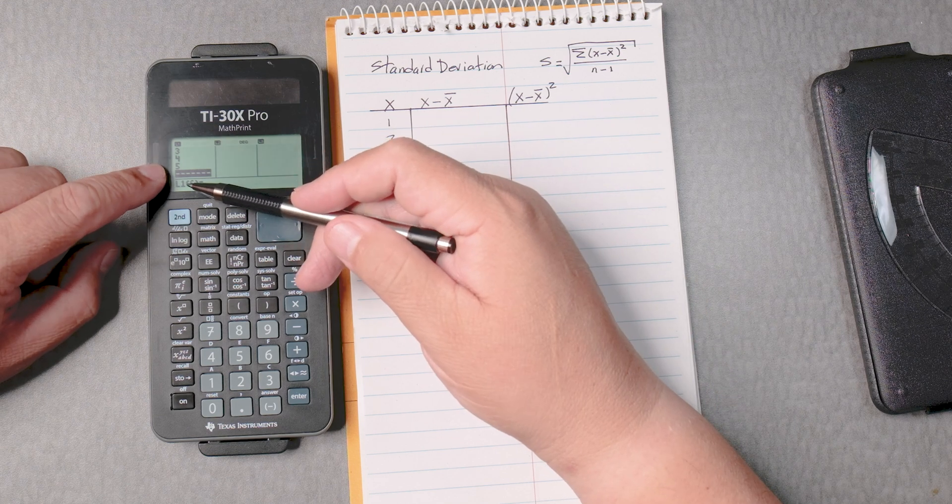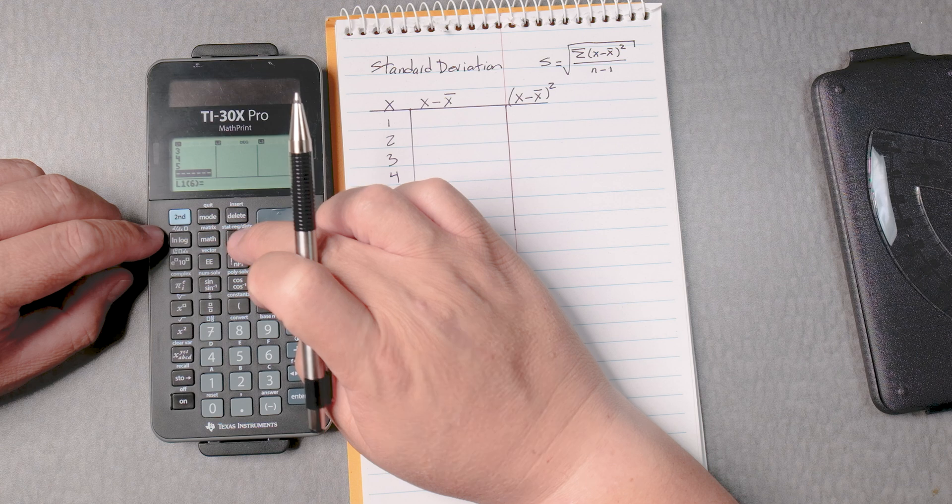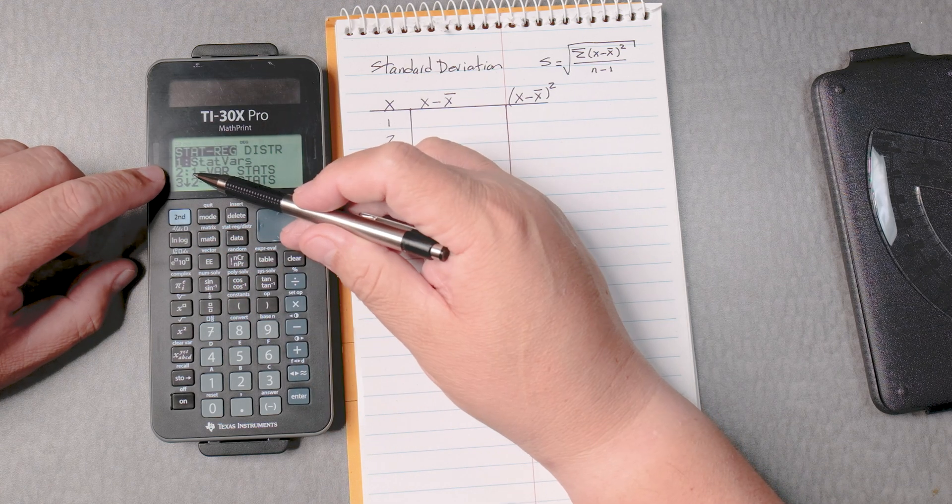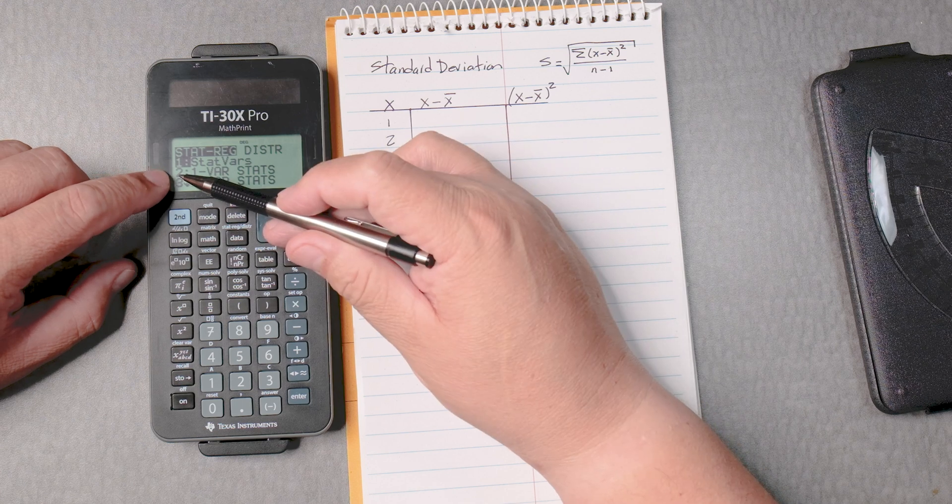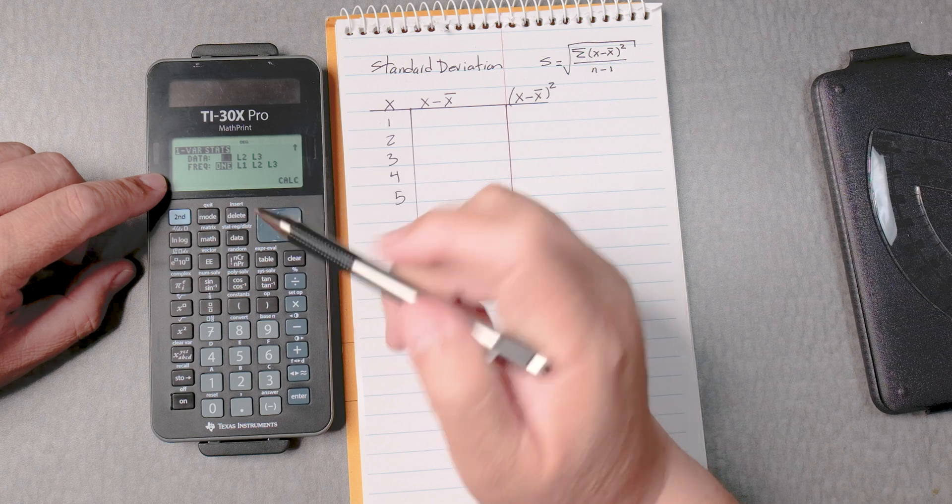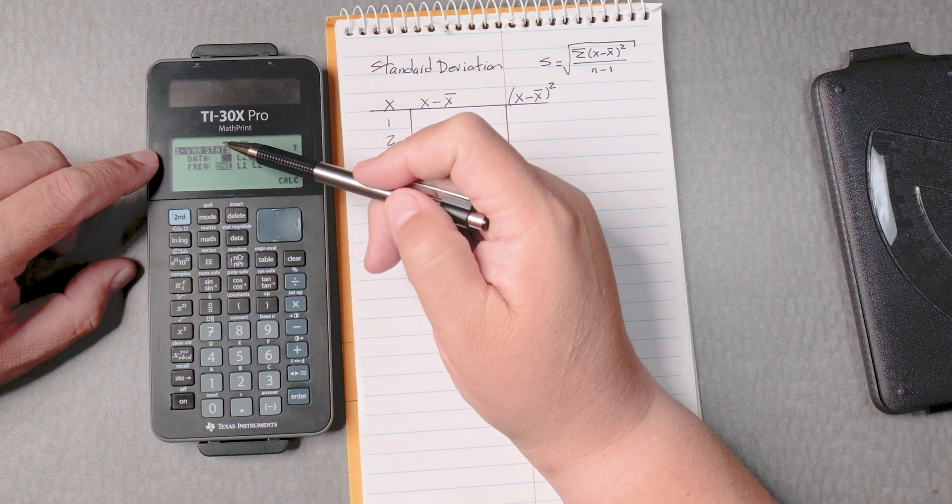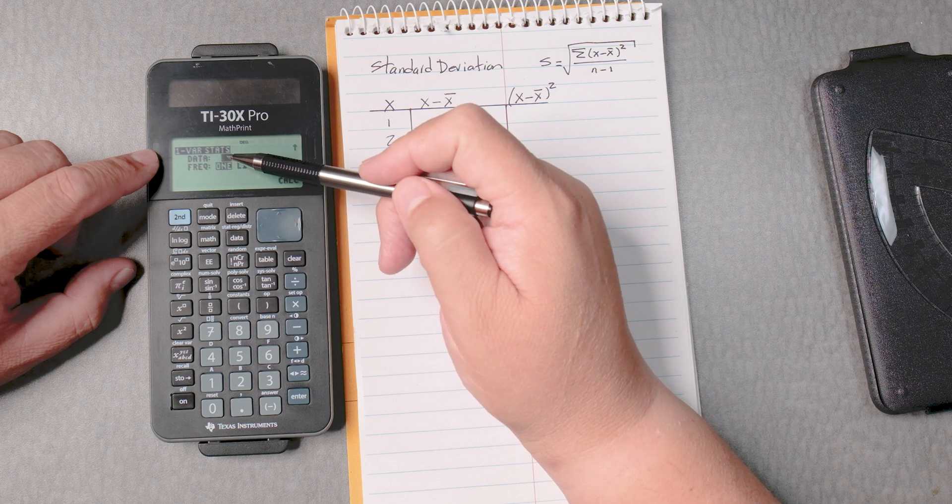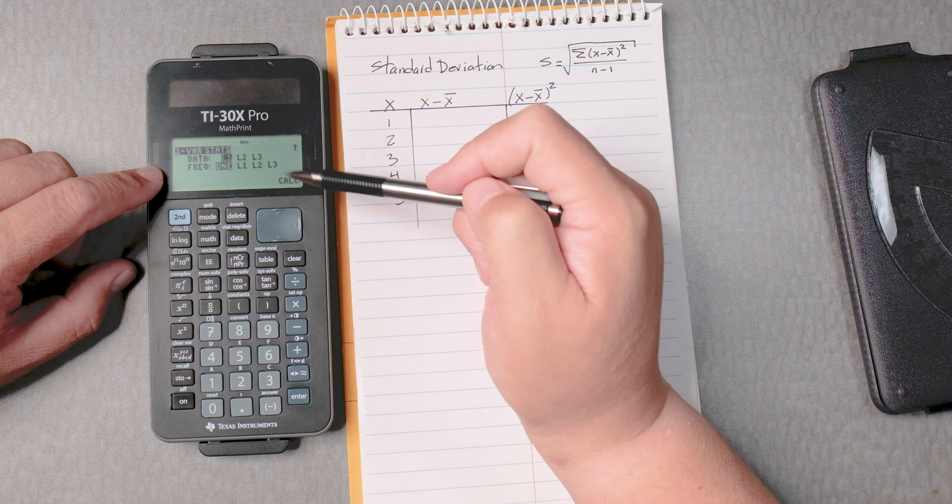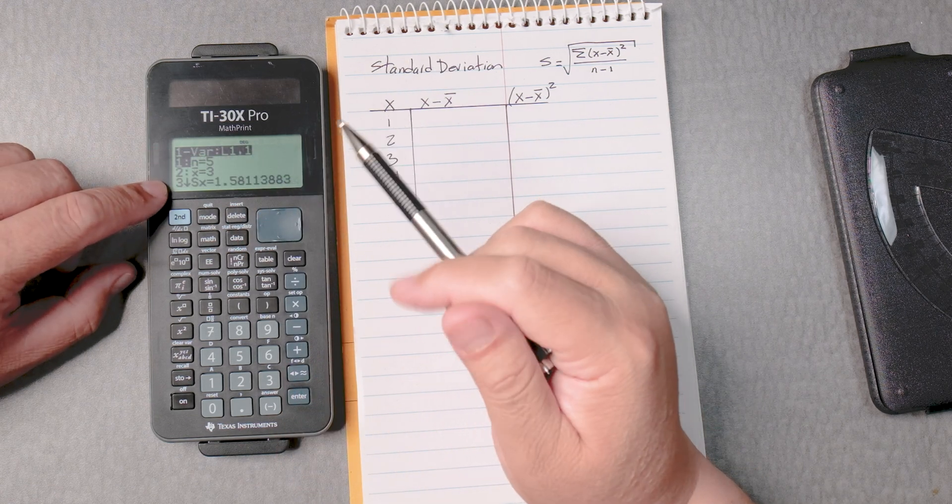So this is one variable, and we can do a one variable statistic. So if we press second data, we can go to one variable stats, which is number two, or we can use a D-pad to move it down and then press enter. And it says here, one variable statistics. Data L1, frequency is going to be one. There is no frequency. And then we enter, enter, and then we enter again, and it gives us this information.